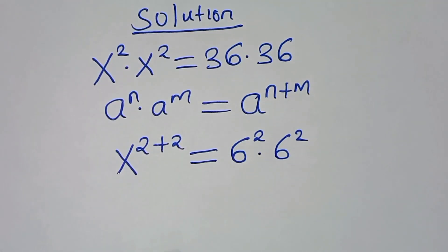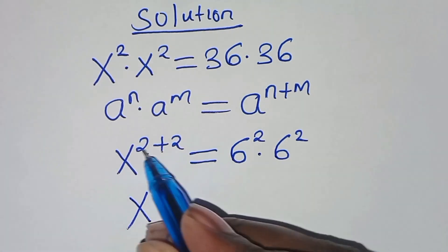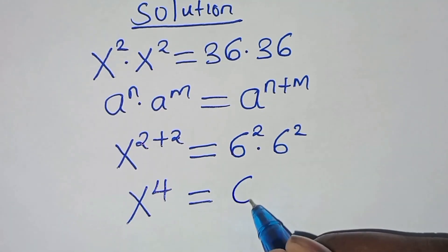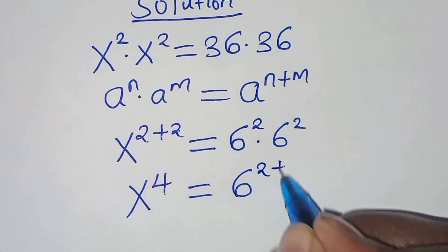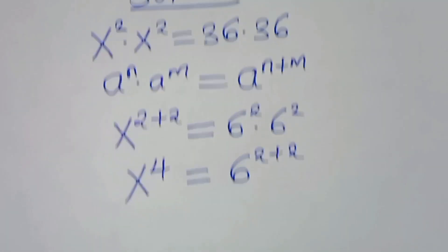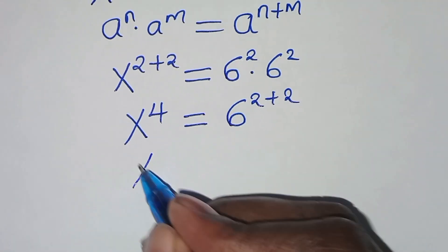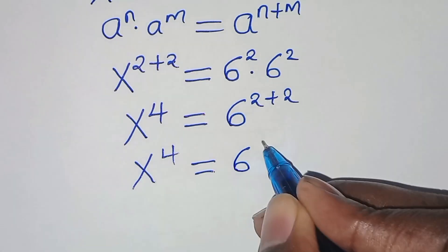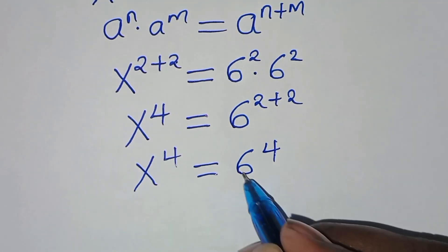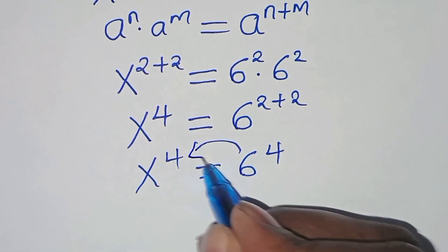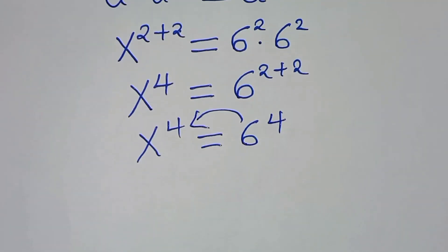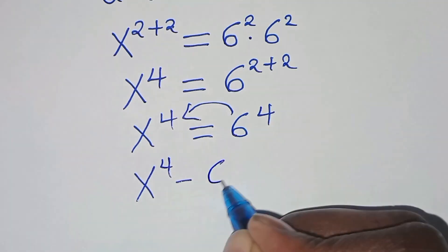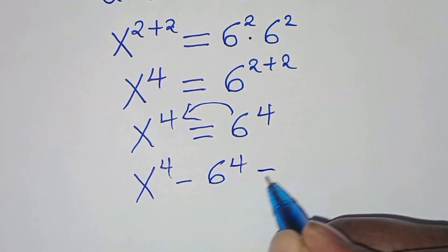This implies x to power 2 plus 2, which is x to power 4, equals 6 raised to power 2 plus 2, which is 6 to power 4. So let's bring 6 to the power 4 to the left side, giving us x to power 4 minus 6 to power 4 equals 0.